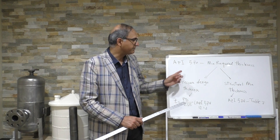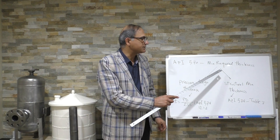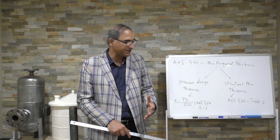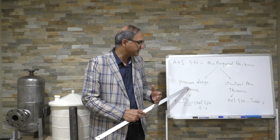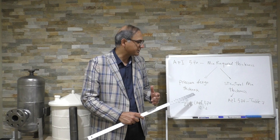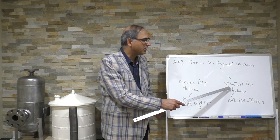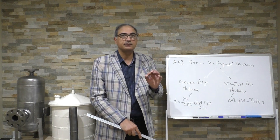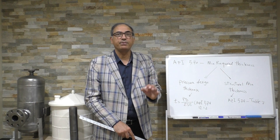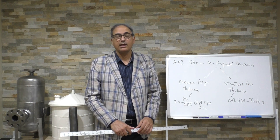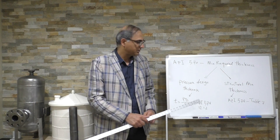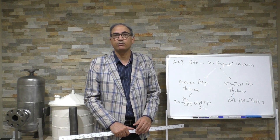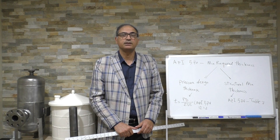For the purpose of determining minimum required thickness for process piping placed in service, we have to calculate the pressure design thickness and read the number from Table 7 for that certain pipe size, then compare them — whichever one is higher, we take that as the minimum required thickness.